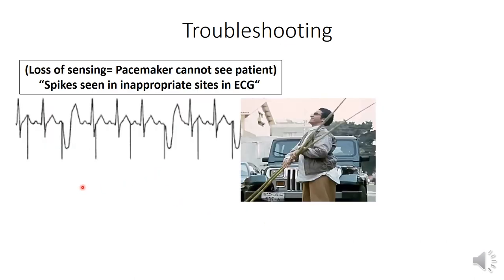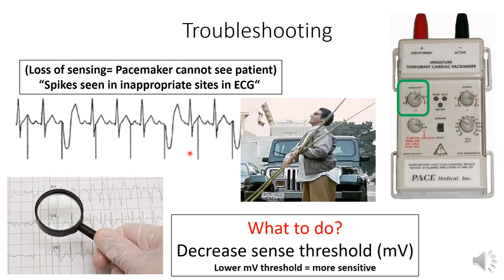The other problem is loss of sensing — the pacemaker cannot detect the patient's heart rhythm and fires regardless, which we diagnose by seeing pacemaker spikes at inappropriate times, such as on the T wave. The solution is to decrease the sensitivity threshold so that with a lower millivolt threshold the pacemaker becomes more sensitive, can detect the native heart rhythm, and inhibits itself appropriately.